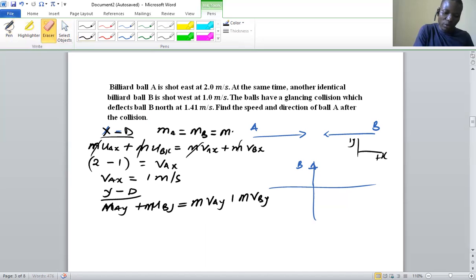Initially, both balls were moving in the x direction, in the horizontal, so they don't have components in the y. So this is zero for both of them initially.